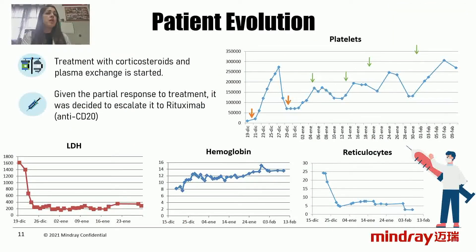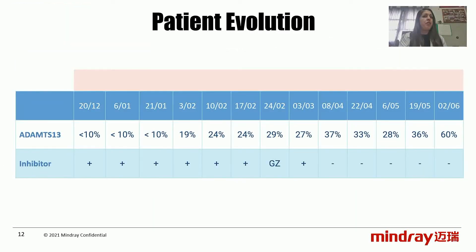Treatment with corticosteroids and intensive plasma exchange was started, totaling more than 20 cycles. Given a partial response to treatment and the confirmed diagnosis of iTTP, it was decided to add rituximab, which in our country is one of the drugs of choice for this pathology. In the platelet graph, the corticosteroid pulse can be observed in orange and the rituximab pulse in green, evidencing that despite an unstable course and infections during treatment, after starting rituximab therapy, platelets began to increase along with hemoglobin, and a notable decrease in reticulocytes and LDH was observed. The following table shows how after starting treatment, ADAMTS13 activity begins to increase and its inhibitor becomes negative.